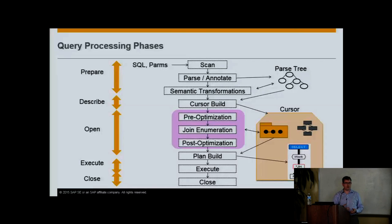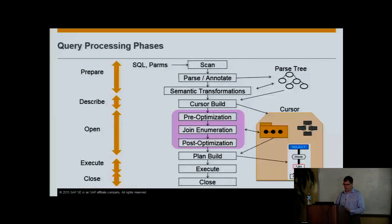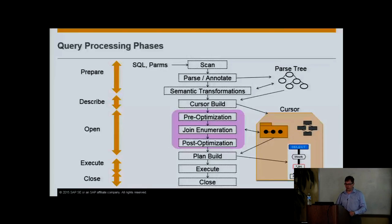The phases of processing are similar to the stack shown for SQLite. You take a SQL statement with parameters, tokenize/scan it, parse it. We use a version of Yacc written at Watcom that handles the same re-entrant and multi-threading concerns discussed for SQLite. Then we get into semantic transformations — rewrites that modify the parse tree for better performance, removing things like unnecessary DISTINCT if you have a primary key in the select list, plus CNF-to-DNF conversions to clean up predicates. The portion in pink is done at open time: a pre-optimization step, join enumeration, and post-optimization.